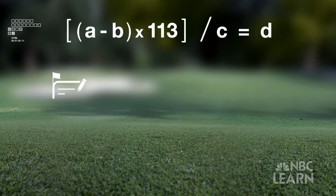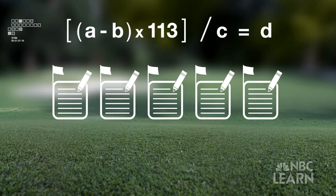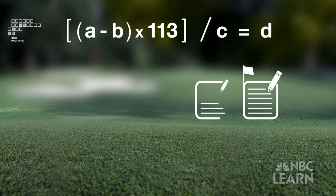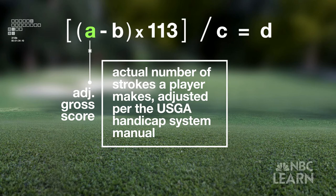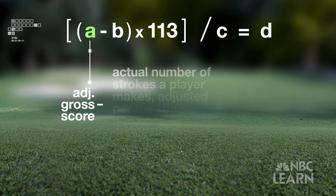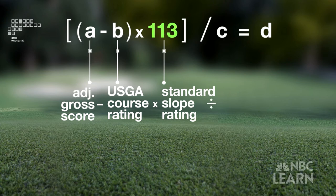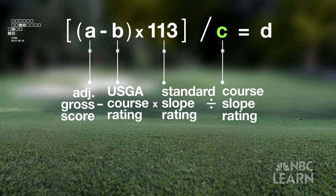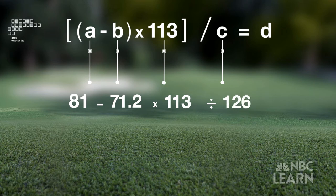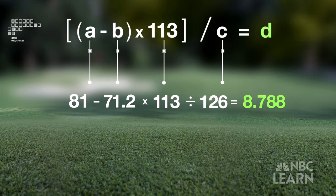For the first part of the formula, a minimum of five scores is required. To calculate a differential for each score, begin with the adjusted gross score — the actual number of strokes a player makes, adjusted per the USGA handicap system manual. Then subtract the USGA course rating, multiply the result by the standard slope rating of 113, then divide by the slope rating for the tees being played. With an adjusted gross score of 81, a course rating of 71.2, and a slope rating of 126, the equation would look like this. The answer is rounded to one decimal. Every score a player submits for handicap purposes gets put into that handicap differential formula.